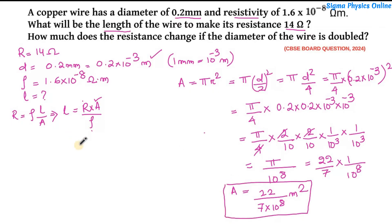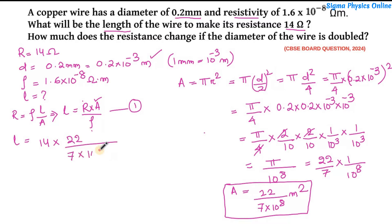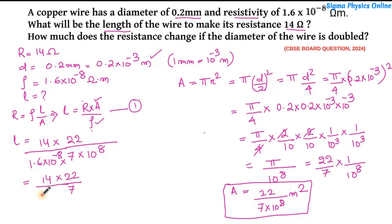Using this area, we substitute the values into equation L = R·A/ρ. So L equals resistance 14 ohm, multiplied by area 22/7 × 10⁻⁸, divided by resistivity 1.6 × 10⁻⁸. The 10⁻⁸ terms cancel out in numerator and denominator.